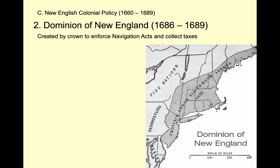Laws don't mean anything unless you're prepared to enforce them. So an institution called the Dominion of New England is created by the king, designed to enforce the Navigation Acts—kind of like the police of the Navigation Acts. It's headquartered in Boston, focusing primarily on the New England colonies. Since Boston is the center of colonial trade, with merchants who build and own ships, this is where the headquarters of the Dominion of New England is placed to enforce the Navigation Acts on trade.